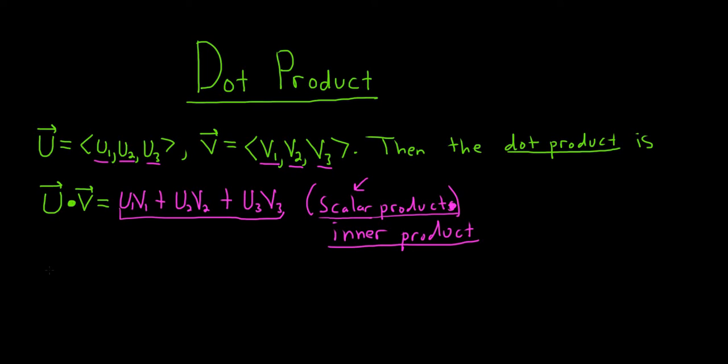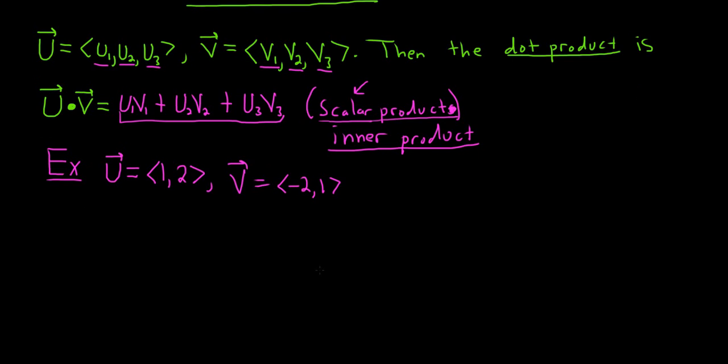Before we go through the properties, let me just give you a really simple example of the dot product. Let's go back to two dimensions. Let's look at u equals, let's say we have 1, 2. And let's say v is equal to negative 2, 1. And let's find the dot product of these two vectors. And if I did it right, this example should be quite enlightening.